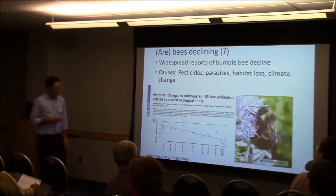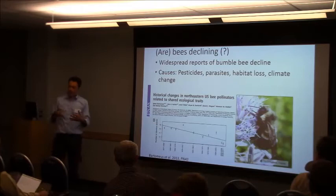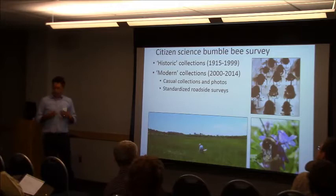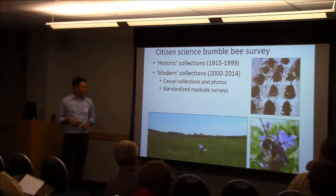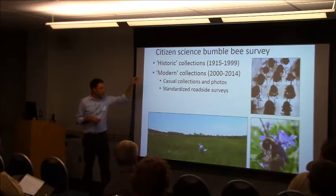One of the problems is that we lack good data from historic time periods for thinking about how common or rare bees were, so it can be difficult to figure out how things have changed. And so in comes citizen science. We decided at Vermont Center for Eco Studies to collect as much of the historic data as we could, and then do new surveys, and look at the relative abundance of the various species in the two data sets. By historic I mean collections up to 1999; by modern I mean everything after that in this survey up to 2014.